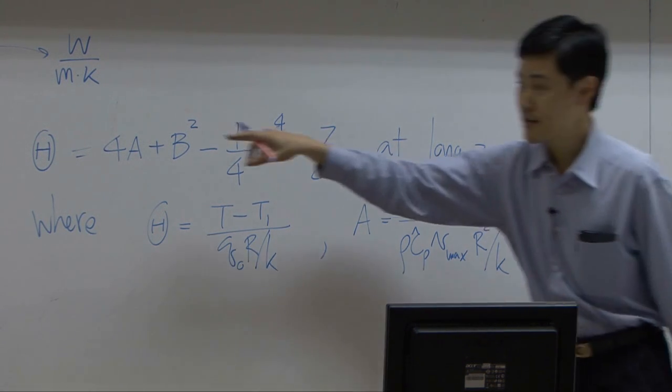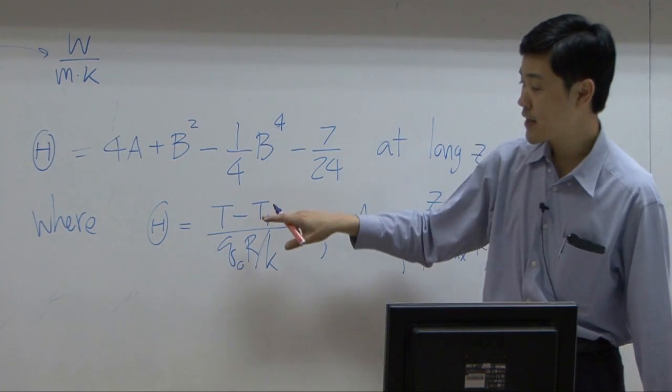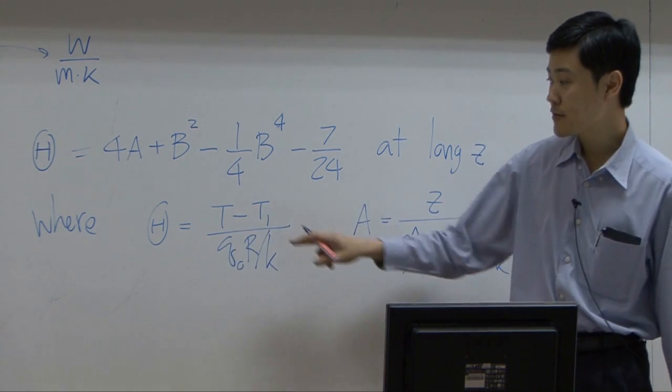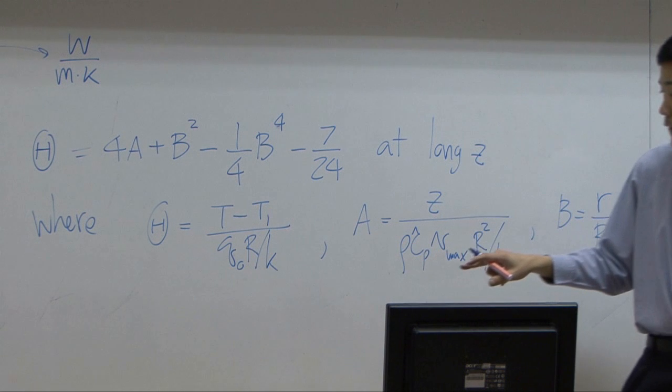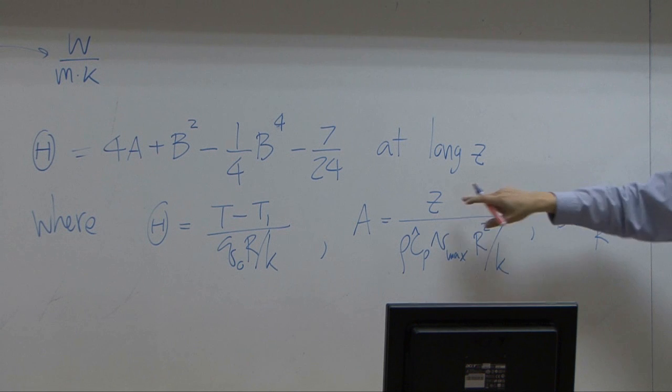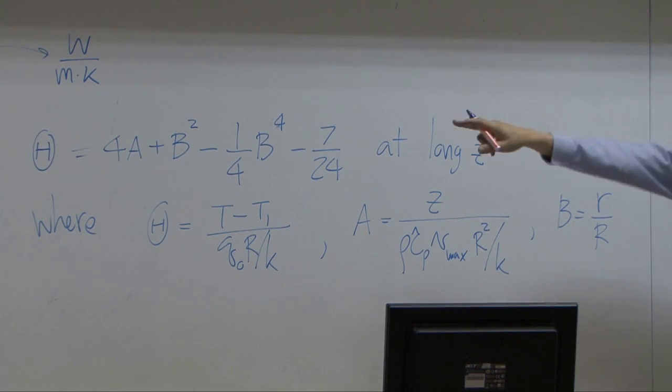Now, from here, the theta represents temperature at different positions. Of course, temperature here is function of both R and Z. A here is function of Z, B is function of R. So therefore, temperature is function of R and Z.